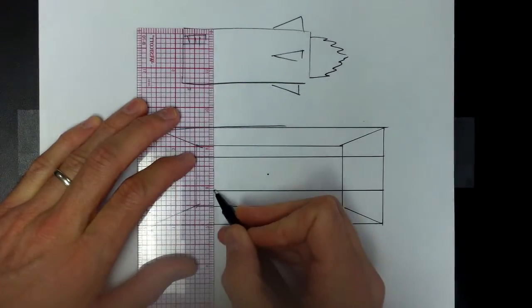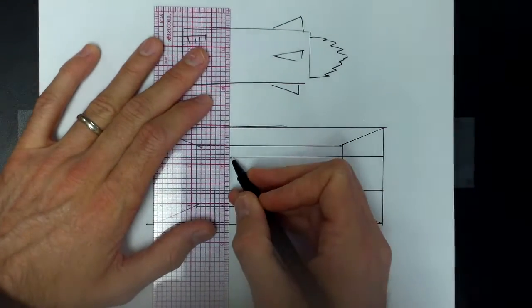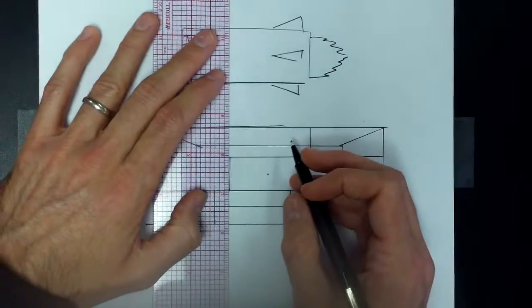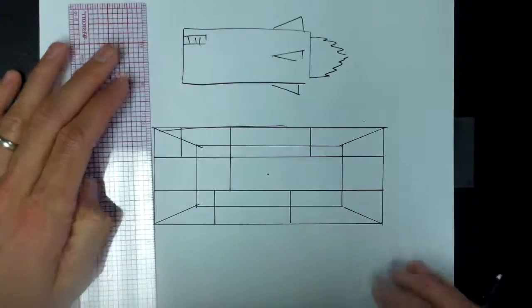So now I'm going to divide each floor by randomly spaced rooms. Some of them will line up, as you'll see, and some won't. But I just want to show you how each divider, each room looks from different angles.